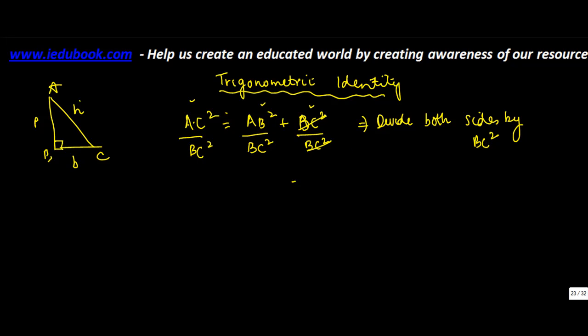So the simpler one, we get one here. This can be written as AB upon BC whole square, because we have AB square upon BC square. And similarly, this can be written as AC upon BC whole square.